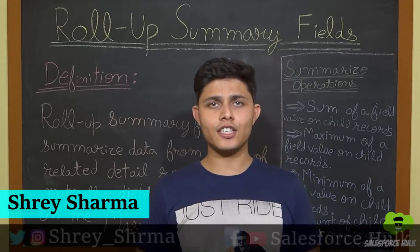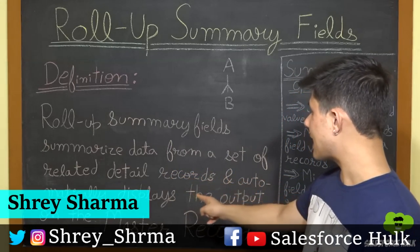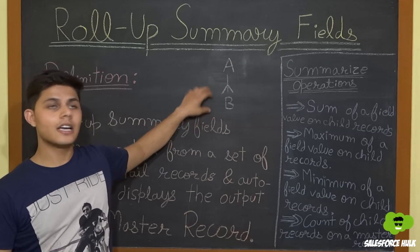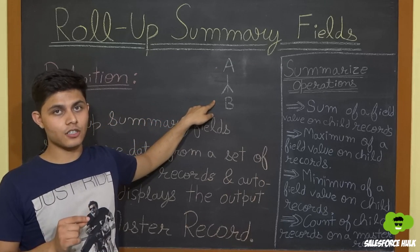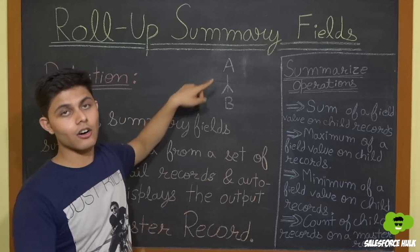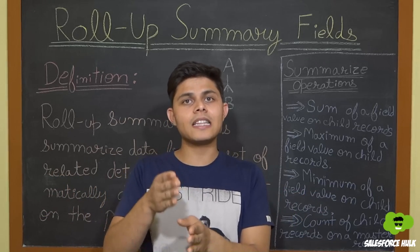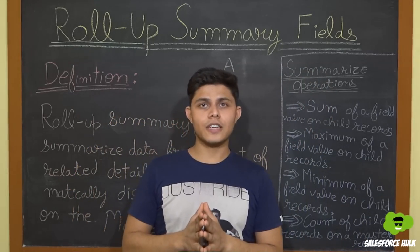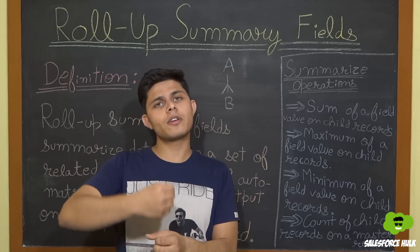Let us first have a look at the basic definition of Rollup Summary Fields. Rollup Summary Fields summarize data from a set of related detail records and automatically display the output on the master record. To explain this, imagine there are two objects A and B, related to each other, where A is on the one side and B is on the many side. You want to summarize a field value on all the child records and display that summarization onto the master record. In that situation, you'll create a Rollup Summary Field.